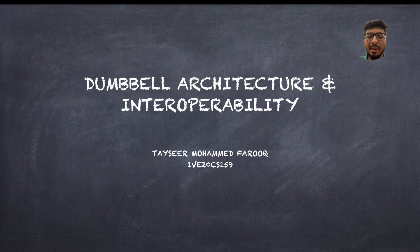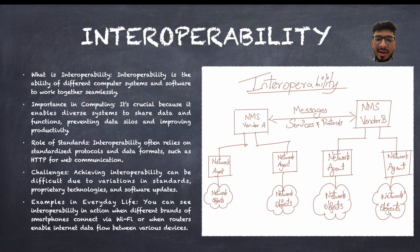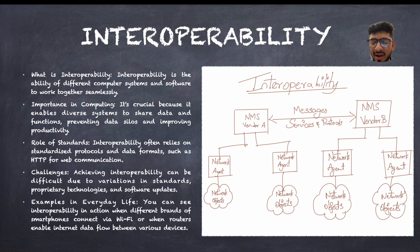So what do you mean by interoperability? Interoperability is the ability of different computer systems which are connected and work seamlessly. Now, you have two different management systems for a network, and one has vendor A and vendor B — both are different companies.